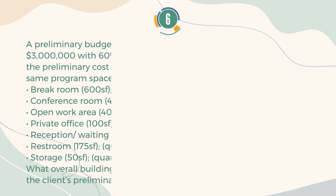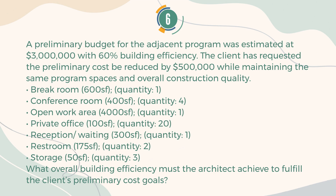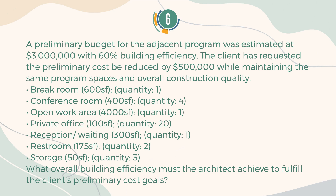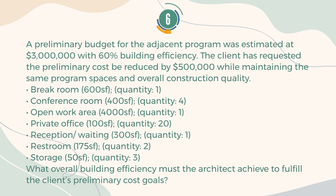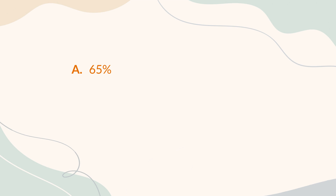Number 6. A preliminary budget for the adjacent program was estimated at $3 million with 60% building efficiency. The client has requested the preliminary cost be reduced by $500,000 while maintaining the same program spaces and overall construction quality. Program: Break room, 600 sq ft, qty 1; Conference room, 400 sq ft, qty 4; Open work area, 4,000 sq ft, qty 1; Private office, 100 sq ft, qty 20; Reception waiting, 300 sq ft, qty 1; Restroom, 175 sq ft, qty 2; Storage, 50 sq ft, qty 3. What overall building efficiency must the architect achieve to fulfill the client's preliminary cost goals? A. 65%. B. 72%. C. 78%. D. 81%.